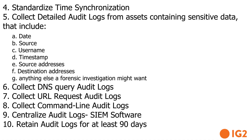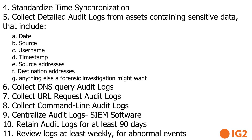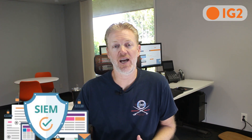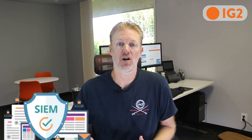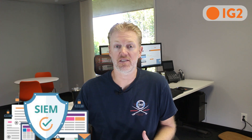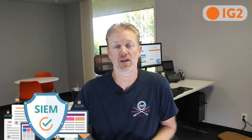Step ten: maintain and save your audit logs for at least 90 days. Step eleven: review all audit logs at least once a week for anomalies or abnormalities. That's a big ask for a lean IT team — it's a lot of audit logs to go through — which is why you might want to look at SIM software and possibly outsourcing that audit log review to a virtual SOC.